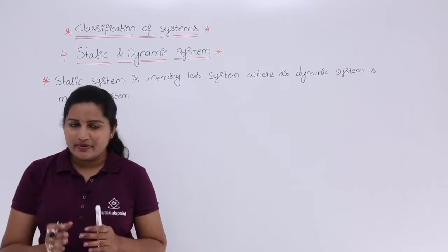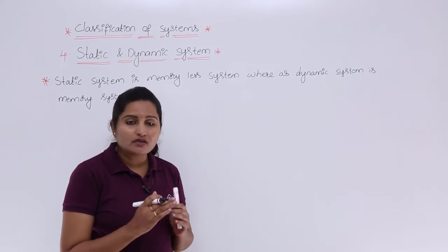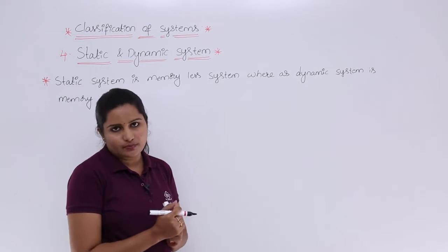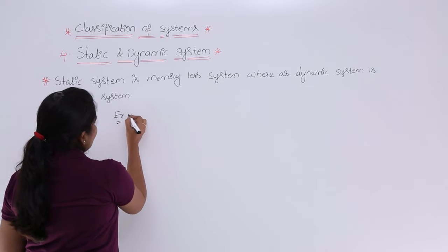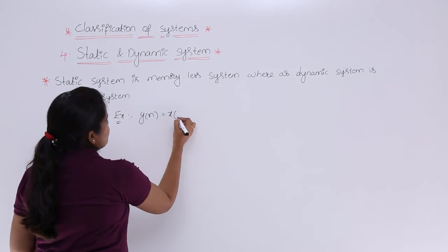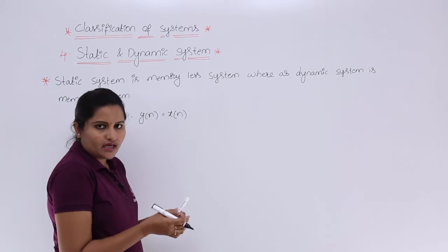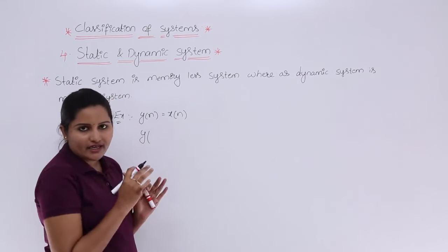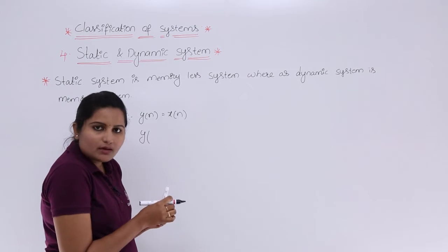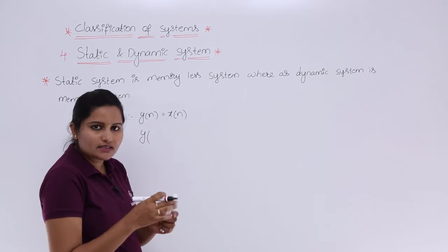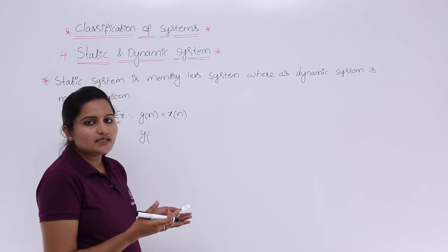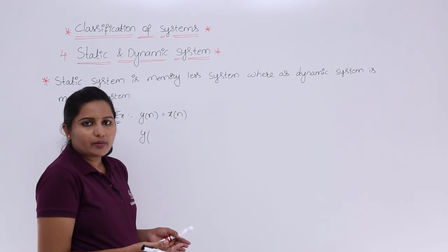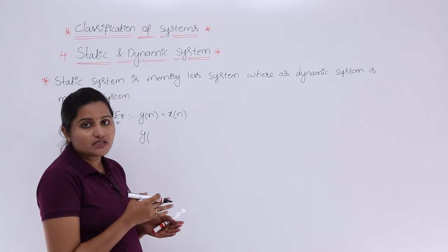To explain this, consider some examples. If you are given a system with a particular response and want to judge whether it is static or dynamic, you need to substitute any value of n. If the system response at a particular instant of time depends only on the present input, then it is a static system — it does not depend on future or past values, so no memory is needed.